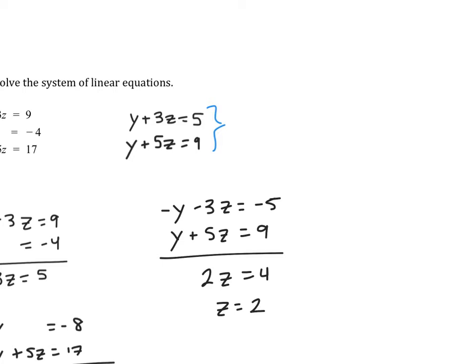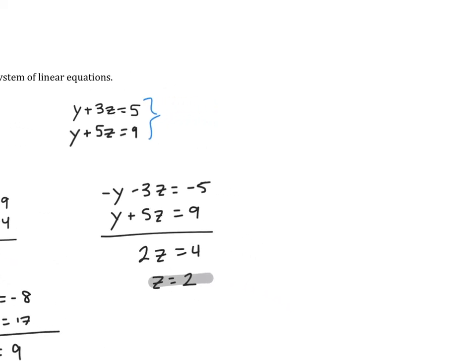So now that we have one of our variables, we're going to stick with our system of 2. And I'm going to substitute it into one of these two equations. So I'll substitute it into the first one. So we can say y plus 3 times 2 equals 5. So our y value is going to be negative 1.